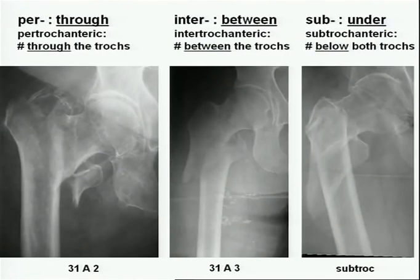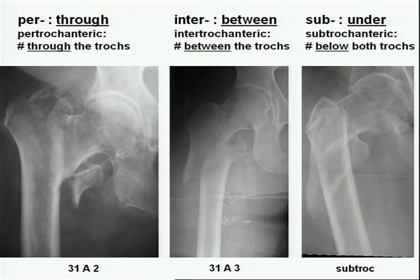If you look at per-trochanteric fractures, the fracture line has to go through the trochanters, like in A1 and A2 type fractures. If you talk about inter-trochanteric fractures, the fracture line has to go between both trochanters — so it has to be a transverse or reverse oblique fracture line.